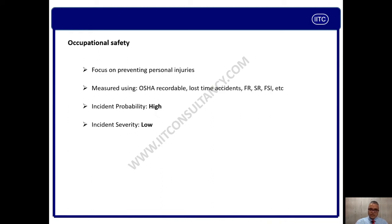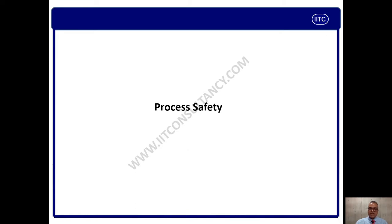Occupational accidents are high in probability — they are always in high numbers — that means failure frequencies and accident frequencies are more, but severities compared to process safety are low. That said, there are fatalities in occupational safety too; for example, a person working at height who falls may unfortunately die. So in general, the severity of occupational-safety-related accidents is lower than process safety.